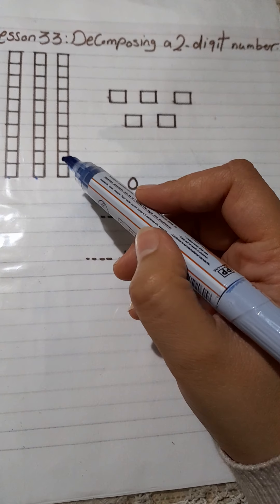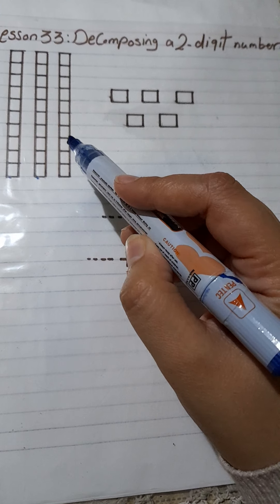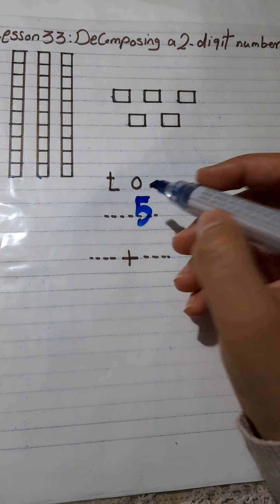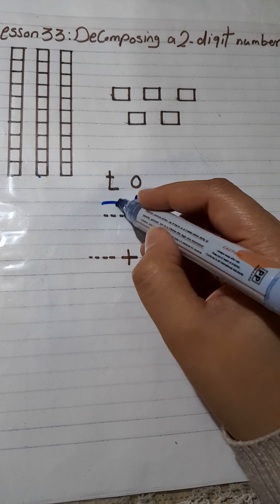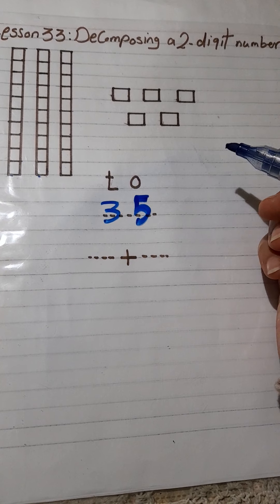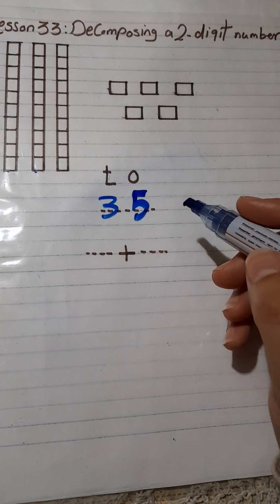How many tens do I have? Count with me. 1, 2, 3. So, I will put 3 in tens. The number is 35.